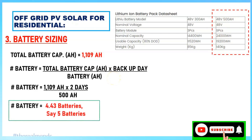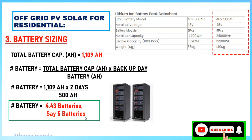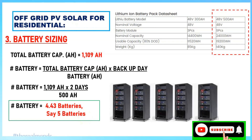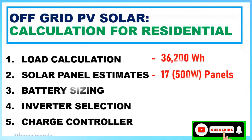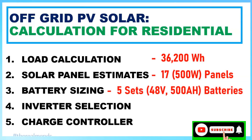Rounding up from 4.43, you need 5 batteries. So the battery sizing result is 5 sets of 48V, 500 Ah batteries. That completes the battery sizing section. Our tally now shows: 17 pcs 500W panels and 5 sets of 48V 500 Ah batteries.